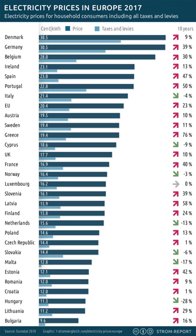Net metering is another billing mechanism that supports the development of renewable power generation, specifically solar power. The mechanism credits solar energy system owners for the electricity their system adds to the grid. Residential customers with rooftop photovoltaic systems will typically generate more electricity than their home consumes during daylight hours, so net metering is particularly advantageous. During this time where generation is greater than consumption, the home's electricity meter will run backwards to provide a credit on the homeowner's electricity bill. The value of solar electricity is less than the retail rate, so net metering customers are actually subsidized by all other customers of the electric utility.